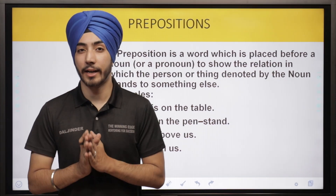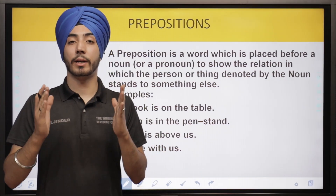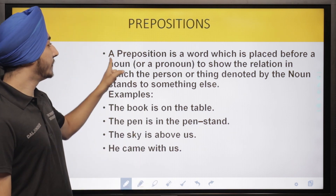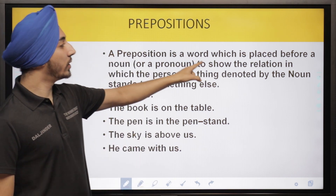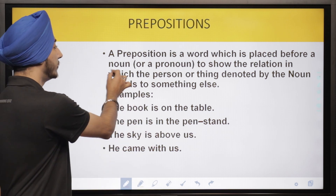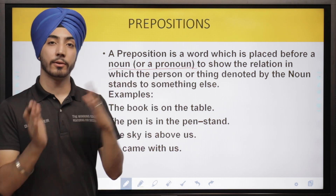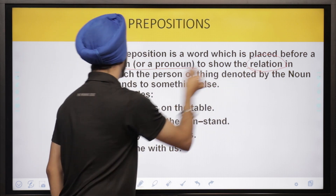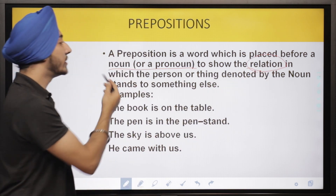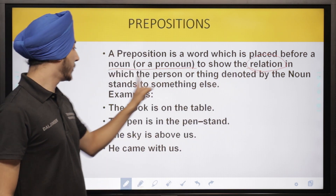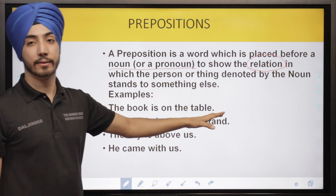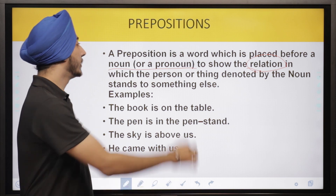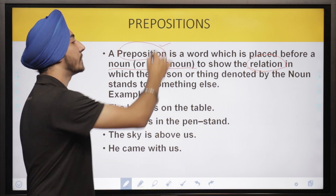Now let's first understand what a preposition actually is. A preposition is a word which is placed before a noun or a pronoun, to show a relation in which the person or thing denoted by the noun stands to something else. So we have a relation between two things that is making the word 'preposition.'